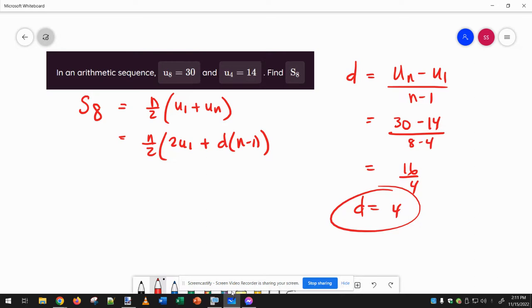Now that we know that, I would probably plug into this one here and just go n is 8. Get the first term by starting at u4 is 14. So u3, if I just subtract 4, u2 is 6, and u1 is 2. So then do 2 times 2 plus d, and n is 8 because of this, so then times 7.